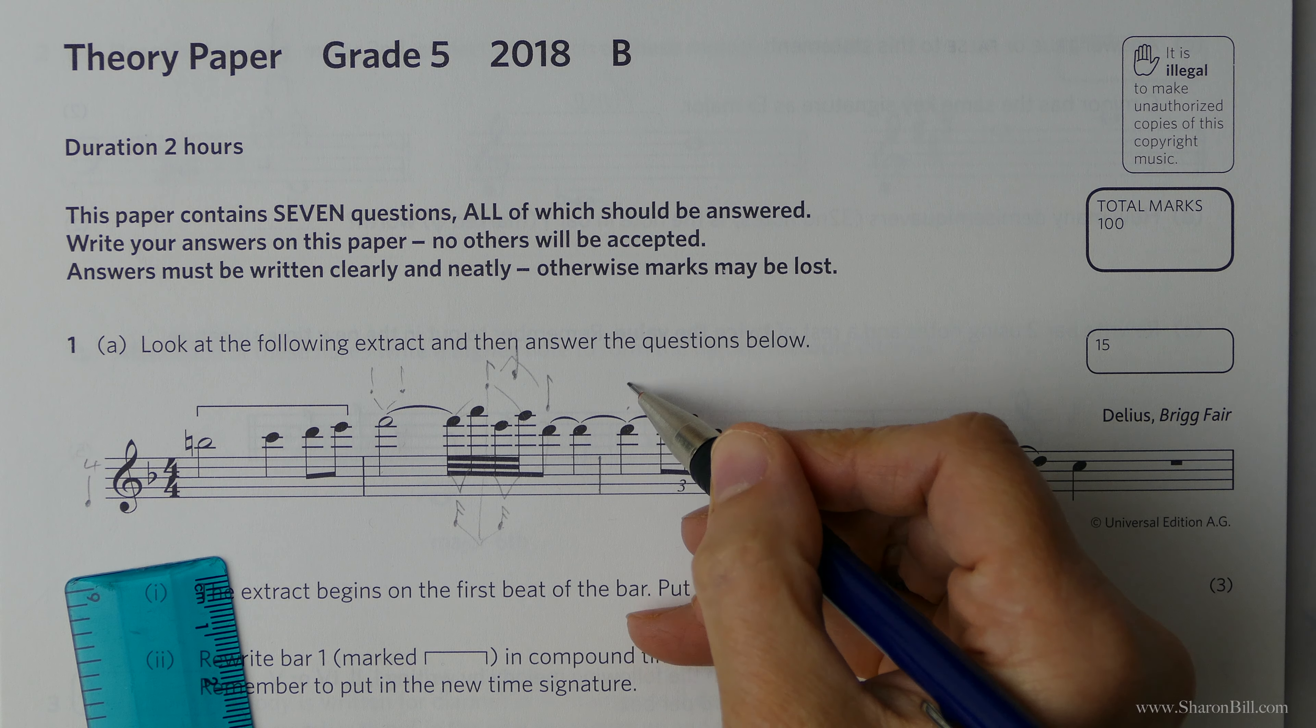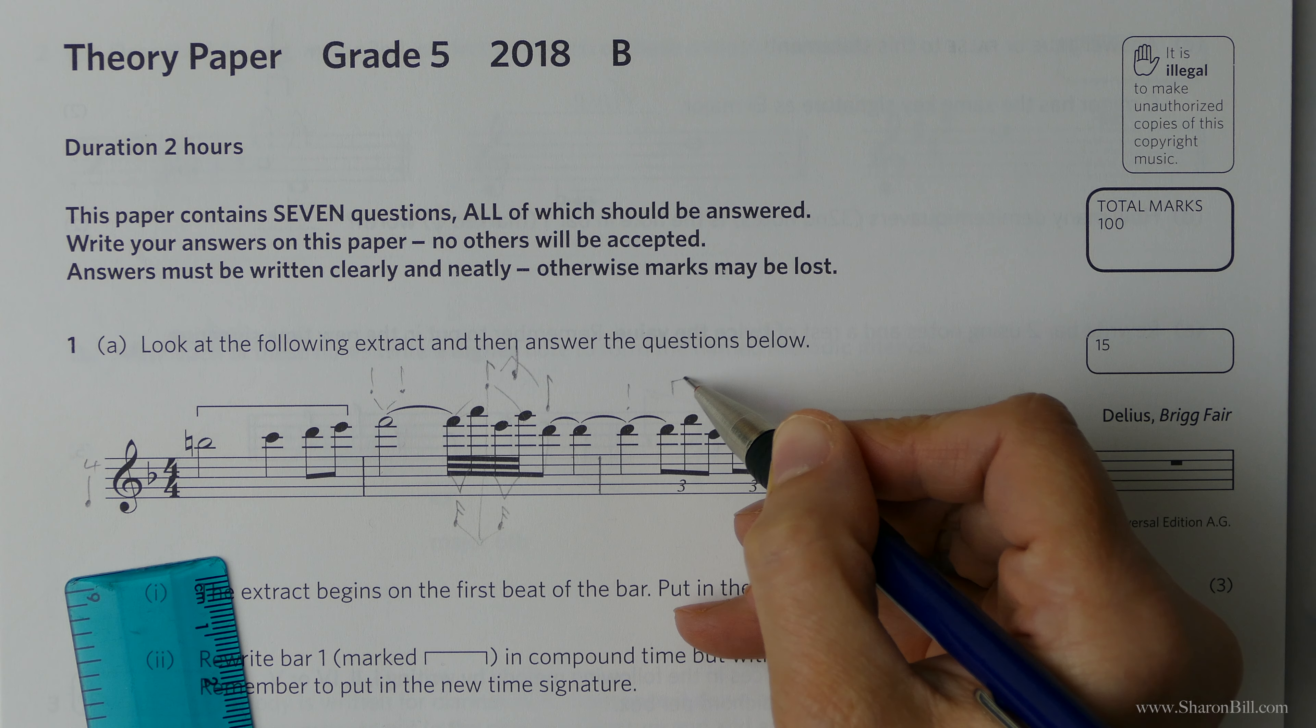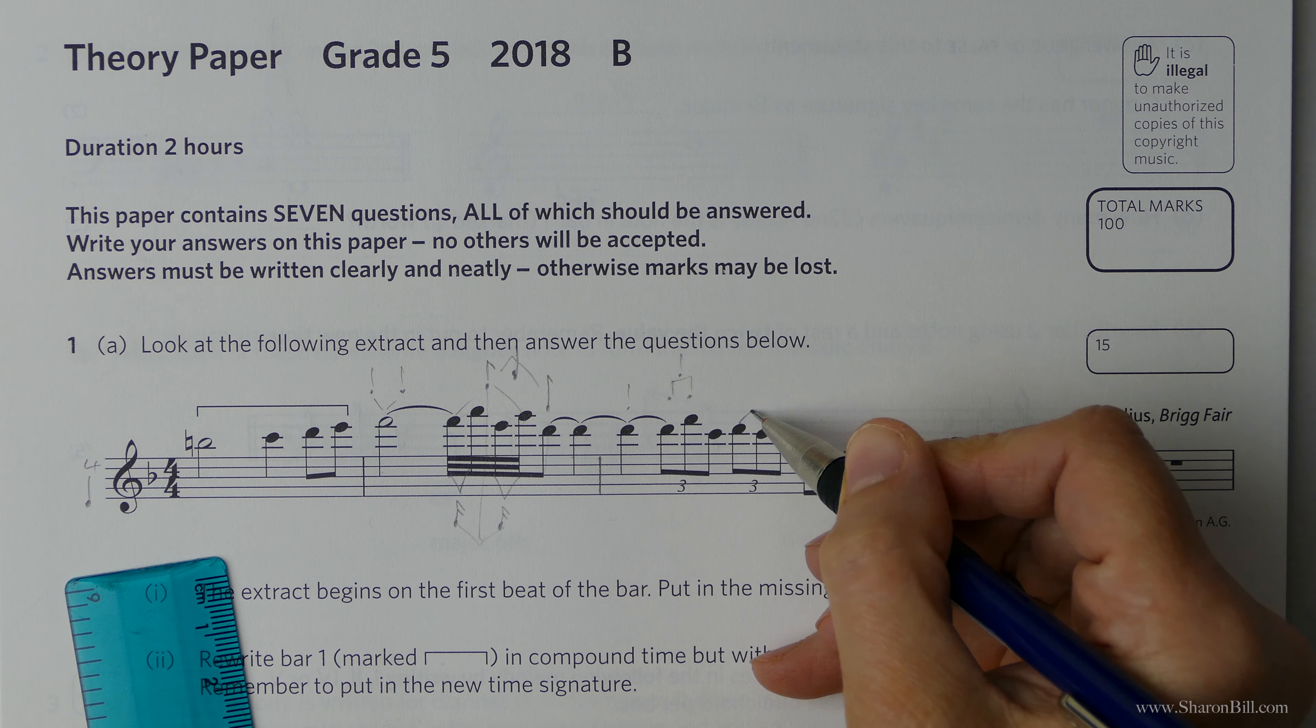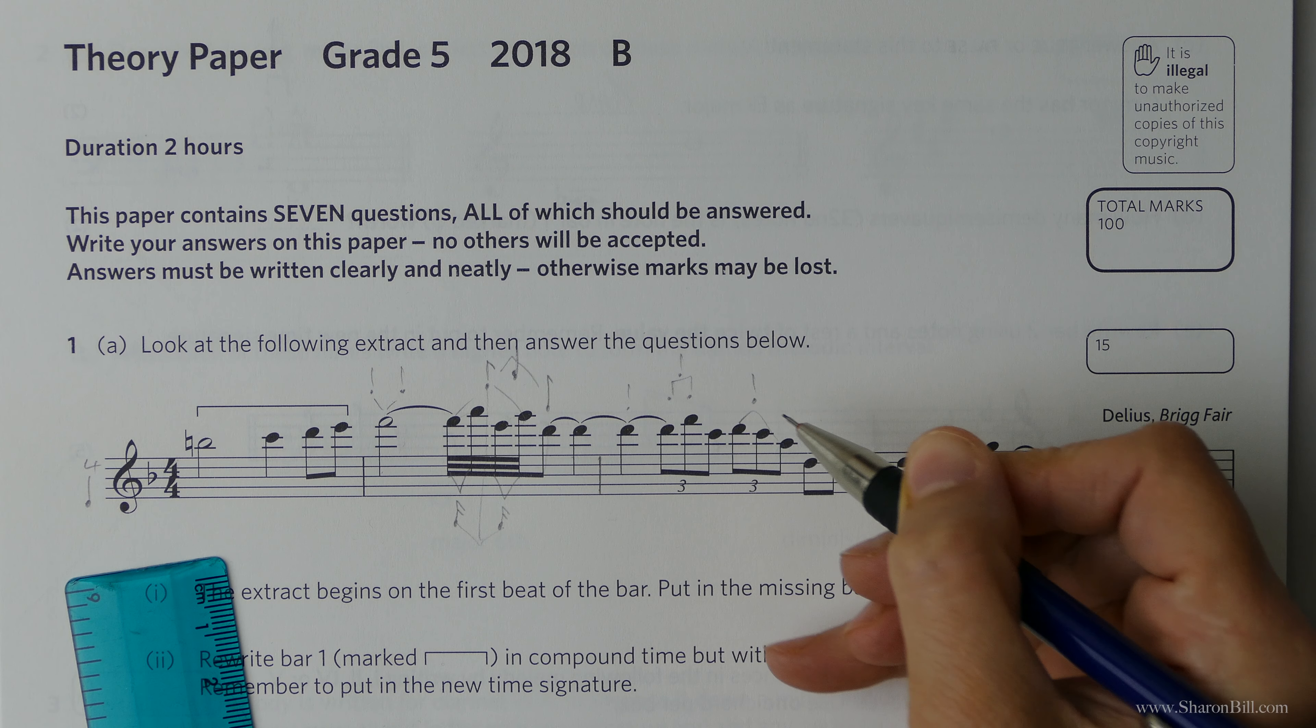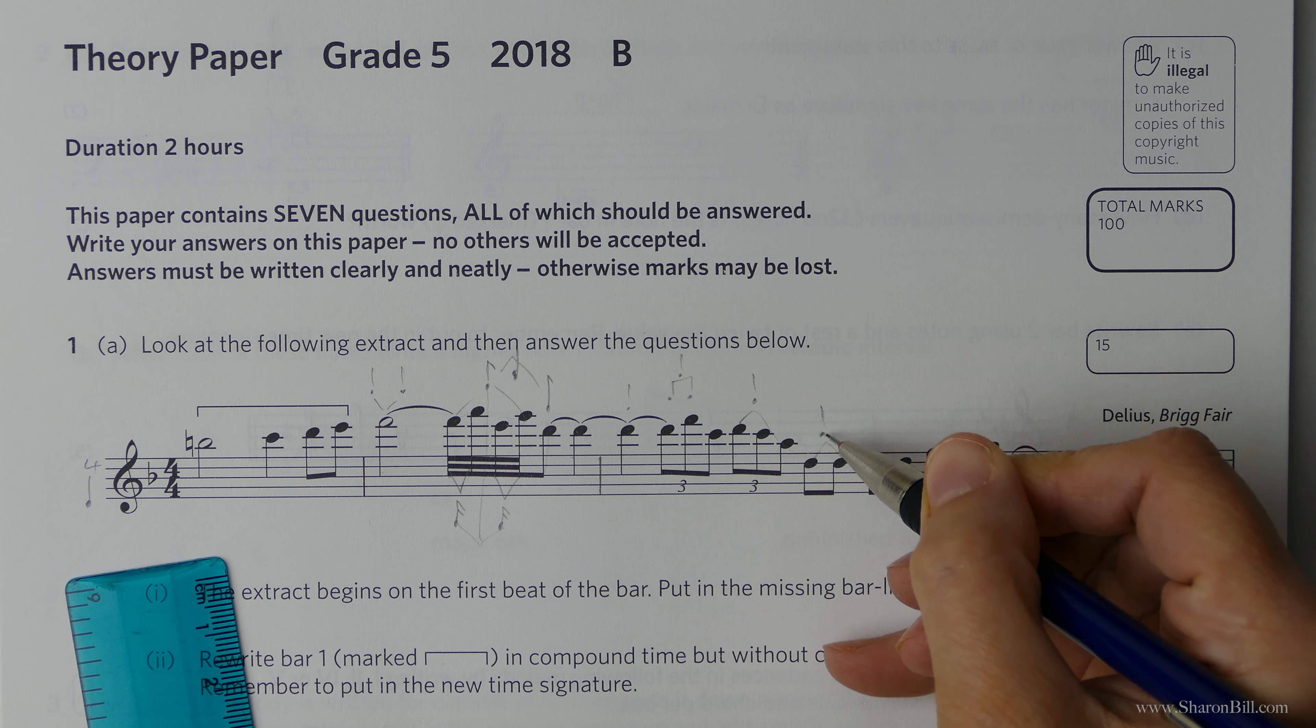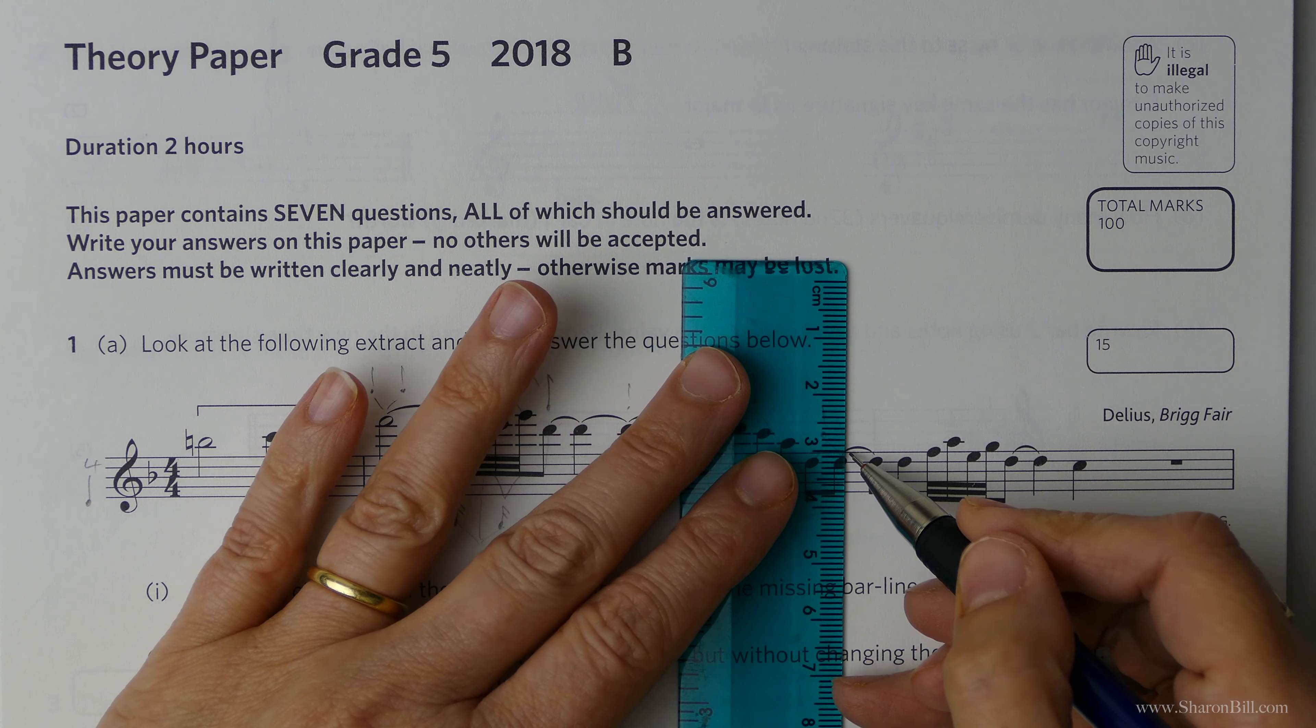So there's 1 beat. 3 in the time of 2. That triplet just means 3 in the time of 2 quavers which gives us another crotchet beat. 3 in the time of 2, same again, gives us another crotchet beat. And then 2 quavers, 2 8th notes gives us a crotchet, a quarter note. So 1, 2, 3, 4. There we go.